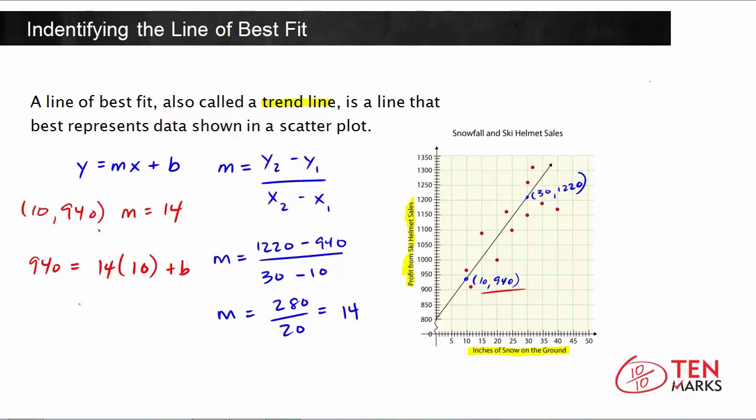14 times 10 is 140, and then plus b. That's what we have on the right side, and then 940 remains the same. To solve for b, subtract 140 from both sides. 940 minus 140 is a difference of 800, so that means the y-intercept for this trend line is 800.